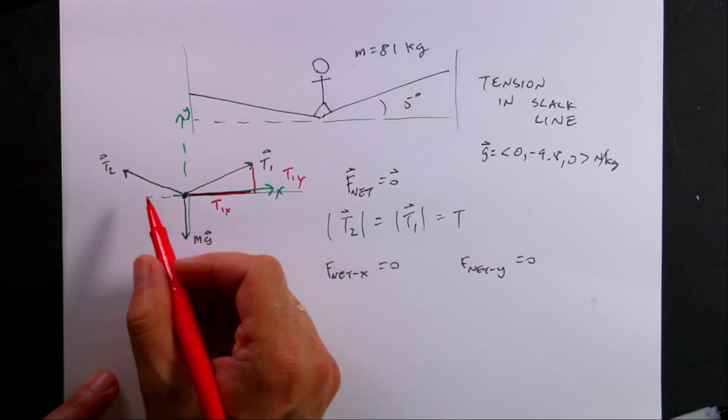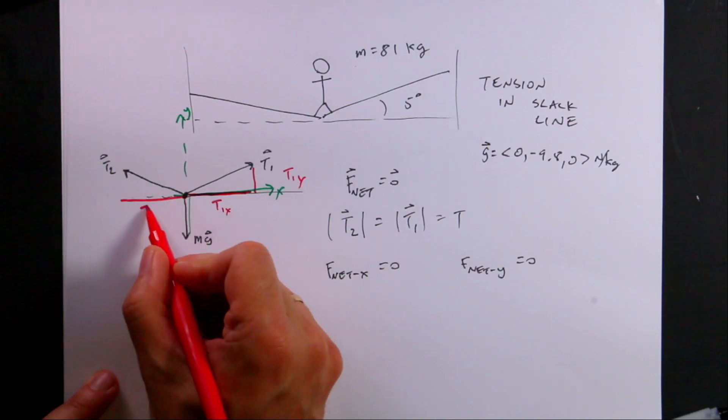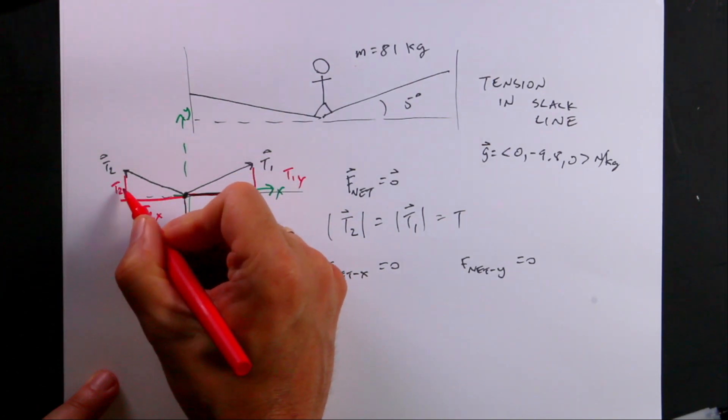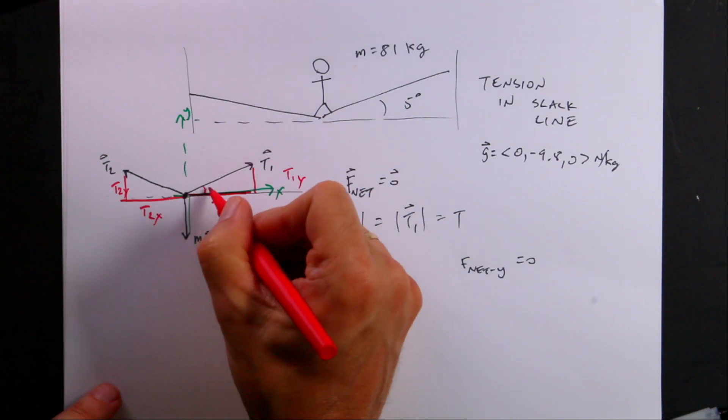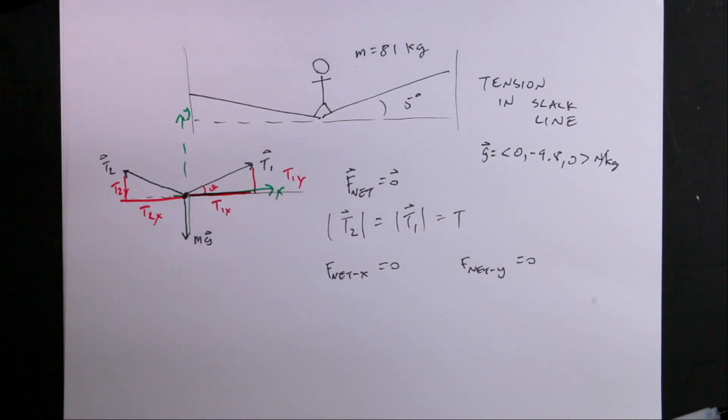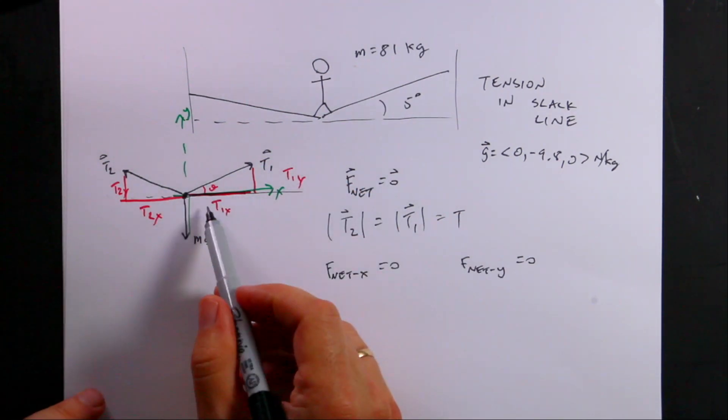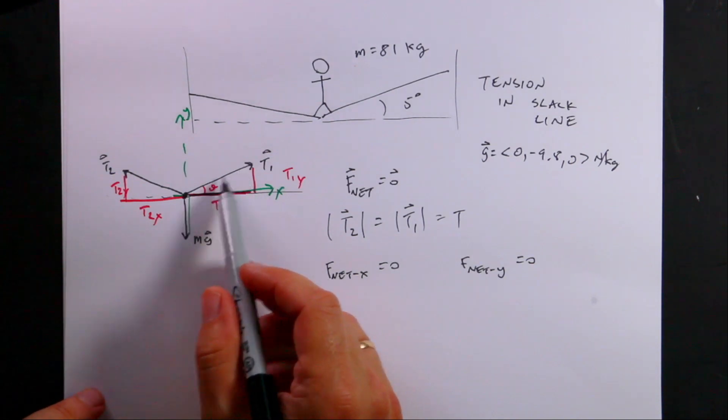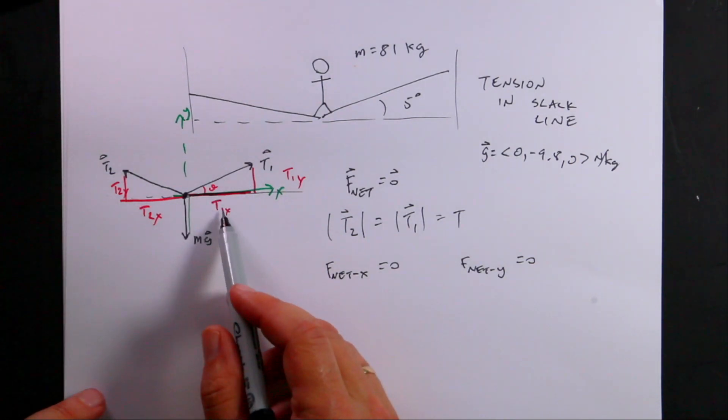And then over here, I have T2x, T2y. And that angle is theta of five degrees. It's a right triangle. So if I take the cosine of theta, I get T1x over t. So the x component of this,